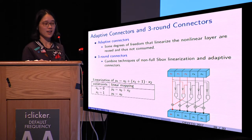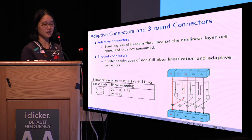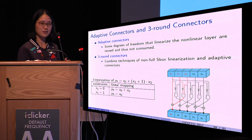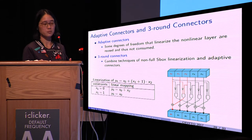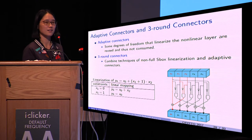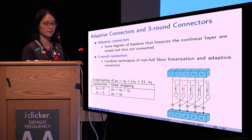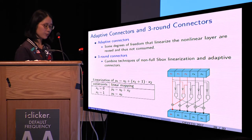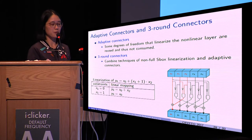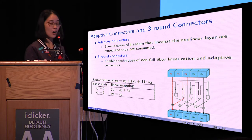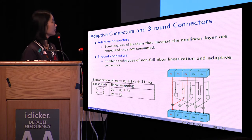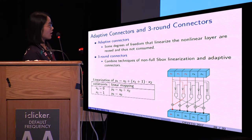Another technique for saving degrees of freedom is called adaptive connectors. Adaptive connectors are those where some degree of freedom that linearize the nonlinear layer are reused. For example, suppose we want to linearize the output bit Y_0 by fixing the value of X_1.